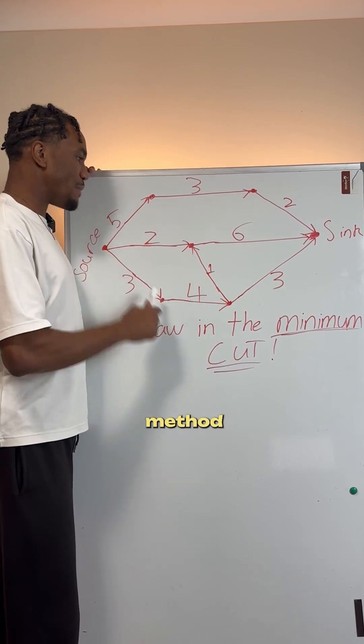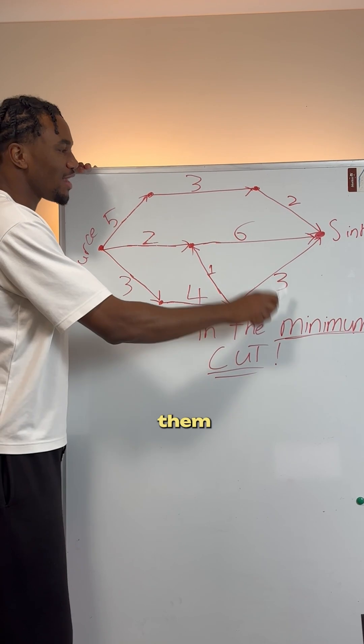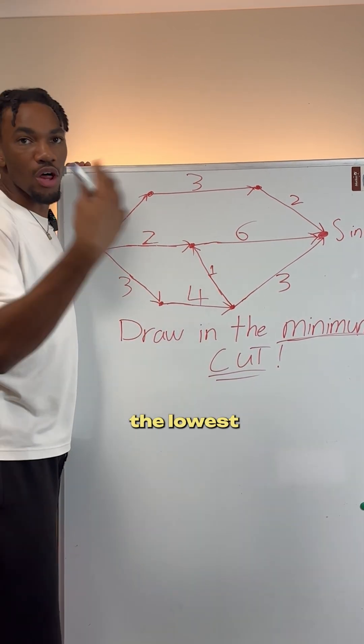What a lot of students do is they do the trial and error method, where they go through each possible cuts and then calculate them, add them up, and they try and find the lowest one.